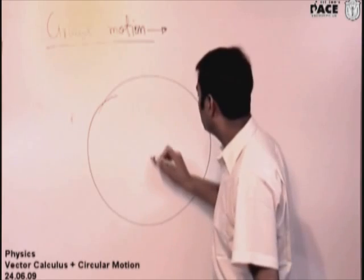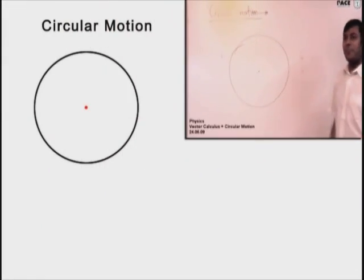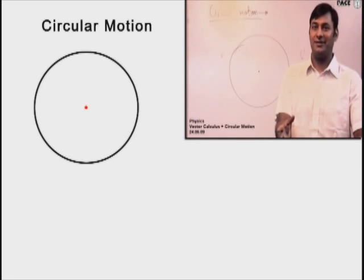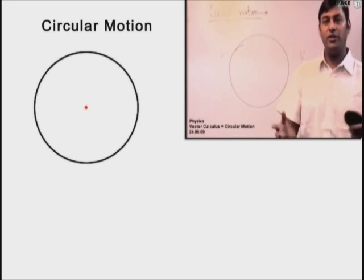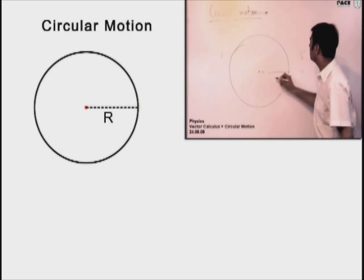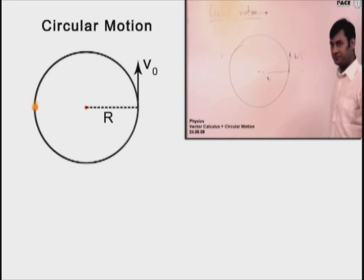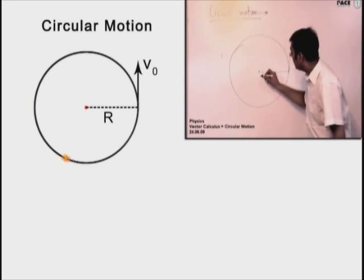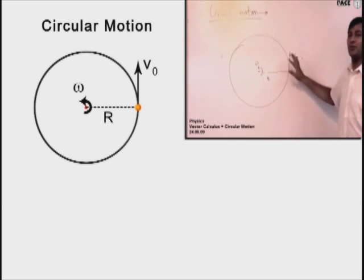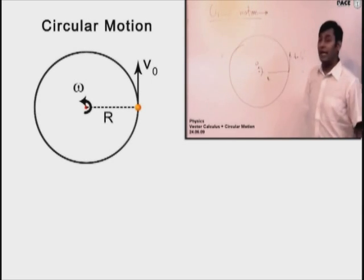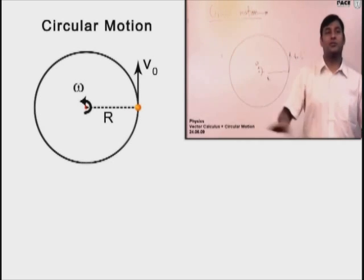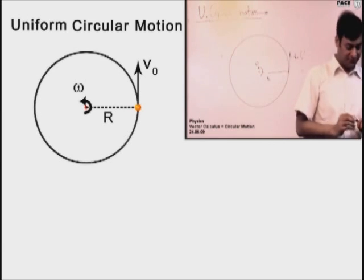Can anyone tell me what I mean by circular motion? When a body is moving in a circle, the motion is called circular motion — and that's the definition. Everything else you already know. This is a circle of radius r, a body is moving in this circle with speed v₀. When a body moves in a circle with constant speed, that motion is called uniform circular motion — UCM. If the speed also changes, it's non-uniform circular motion. Right now we are doing UCM.